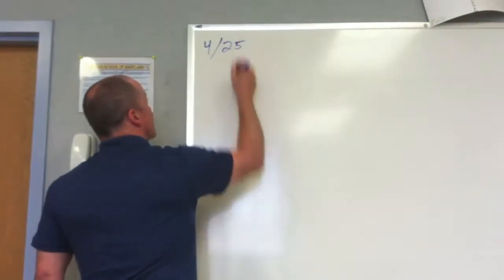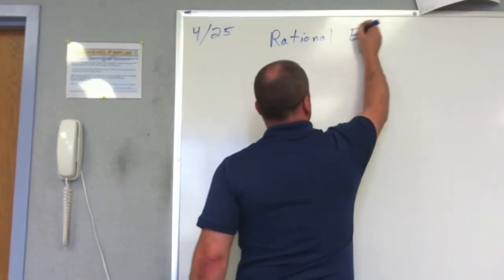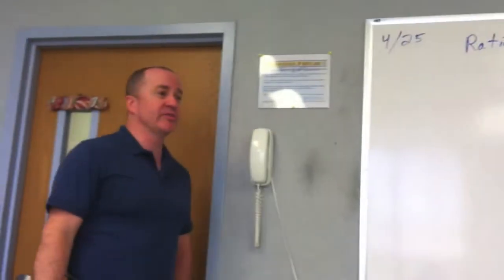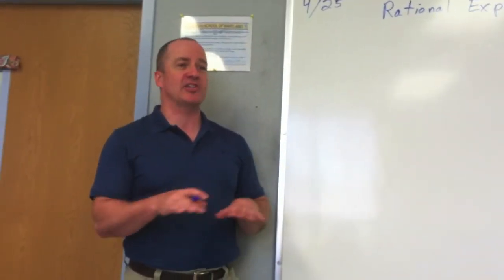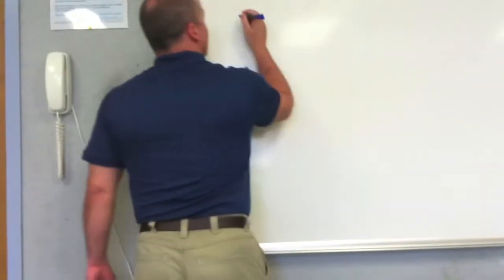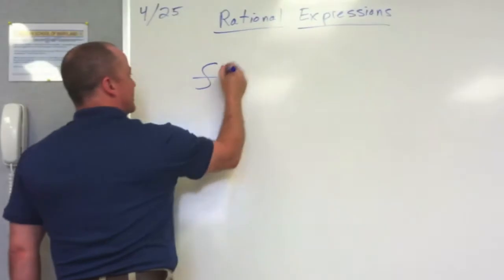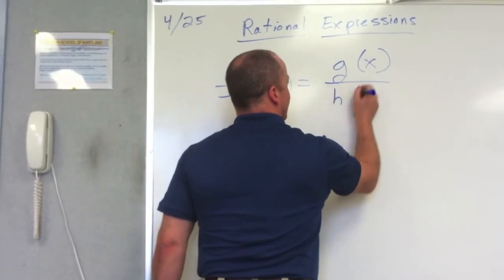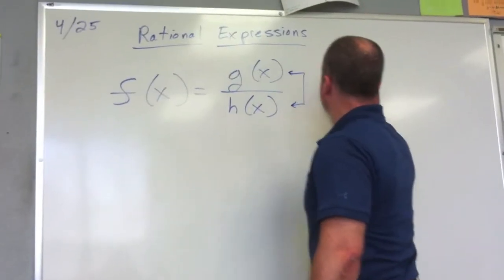Okay, 4/25. Today, rational expressions. I'm not entirely sure what Mr. Singer did with you guys with rational expressions last year. So this is a review, but if you've never seen them before, I may need to slow down. Did you guys see rational expressions last year? Sounds familiar. A rational expression is basically a fraction made up of polynomials. It's a case where f(x) equals one polynomial function over another polynomial function, where these two are both polynomials.